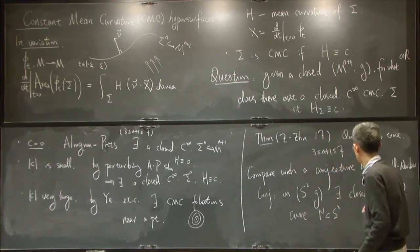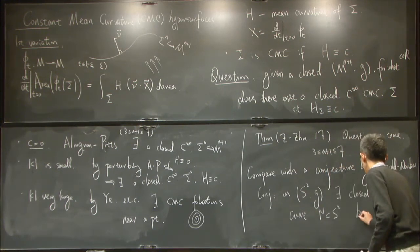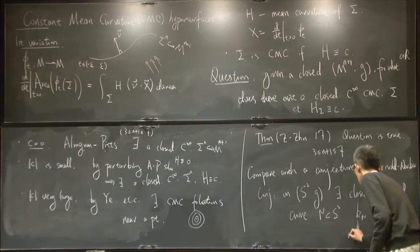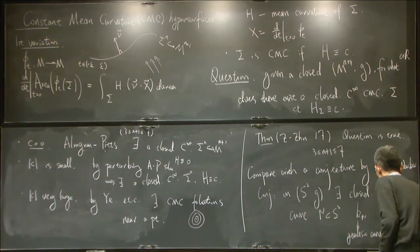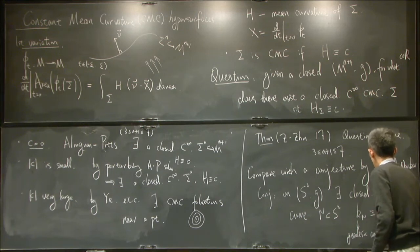So we have gamma, whose geodesic curvature, so this is the geodesic curvature, is equal to an arbitrary given number. It's very analogous to this question.